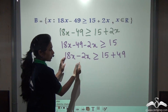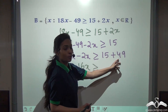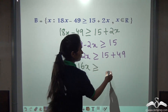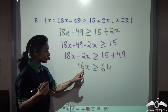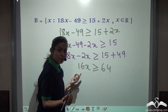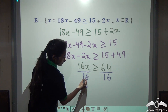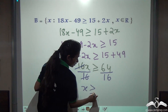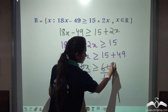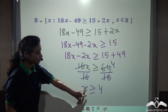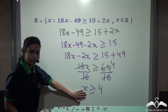Let's solve this. 18x minus 2x is 16x, which is greater than or equal to 15 plus 49. What do you get? 64. Now you have to isolate x and bring the coefficient to 1, so divide both sides by 16. What do you get? 16 and 16 cancel, and 64 divided by 16 is 4. So I am left with x is greater than or equal to 4. But can I write this solution like this only? No.